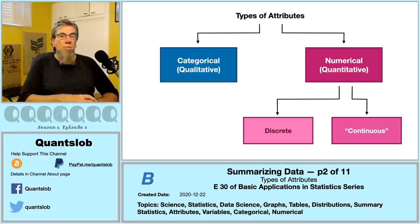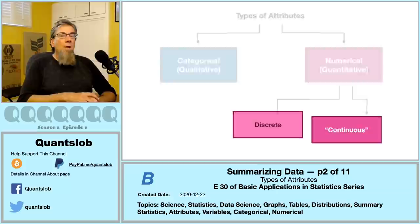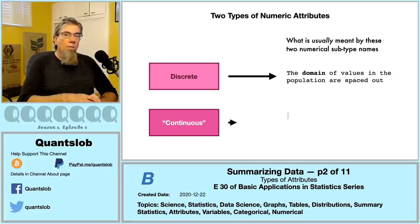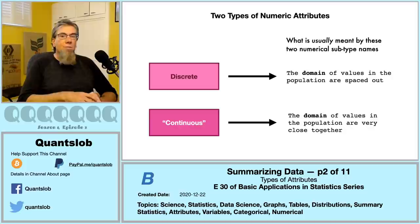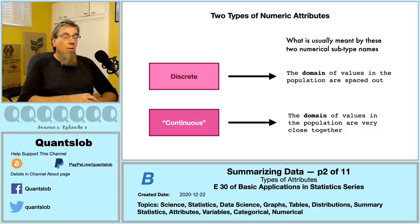Some educators like to split the numerical type into two subtypes: discrete or continuous. In this series we're not going to spend a whole lot of time on that distinction. One reason is that it is somewhat unnecessary for our purposes in the short term, and the other is that the deeper meaning of continuousness is actually rather involved — we offered some detail on this in part five of our QuantSlob series titled 'Continuous Quantities.' An attribute's domain is the collection or set of unique values that comprise it.